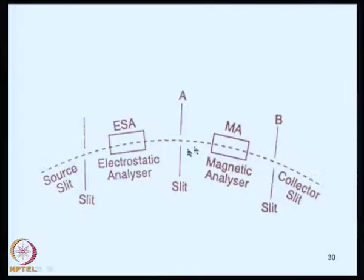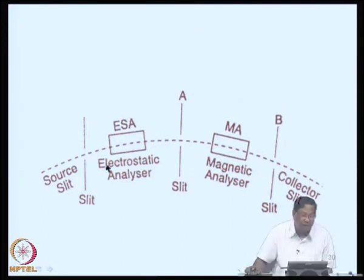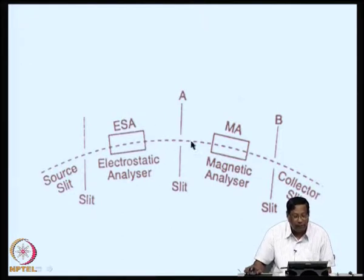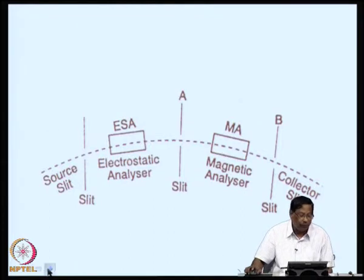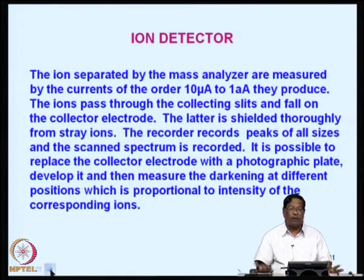In the modified arrangement, there is an ion source, then an electrostatic analyzer, a slit, followed by the magnetic analyzer, and then the collector slit. This way, we can differentiate between 0.01 mass unit very comfortably.